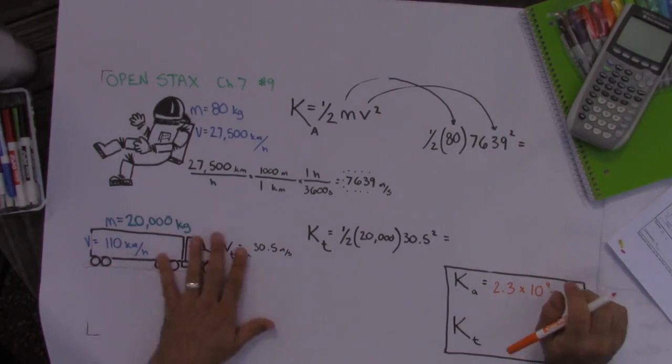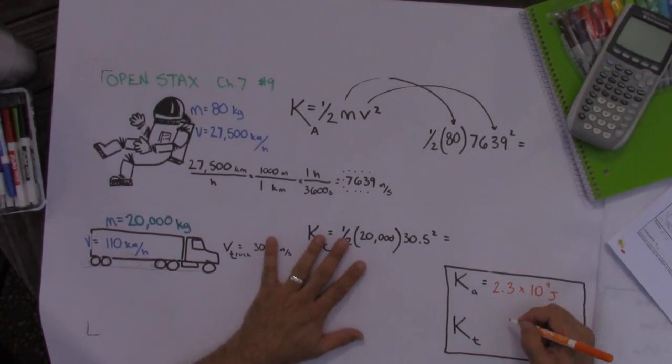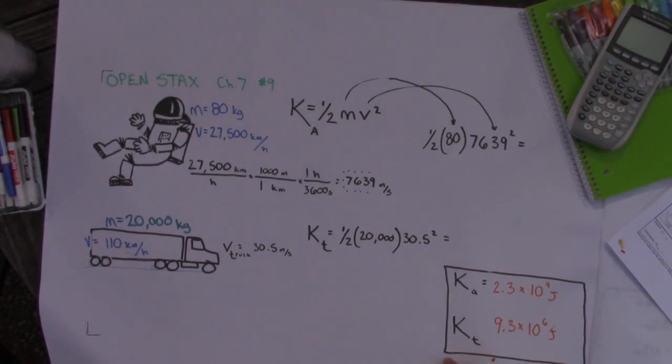10 to the 9th is a billion. And the kinetic energy of the truck is about 9.3 times 10 to the 6th joules, which is in the range of millions. So the kinetic energy of the astronaut is several hundred times larger than that of the truck.